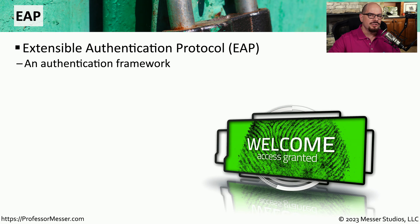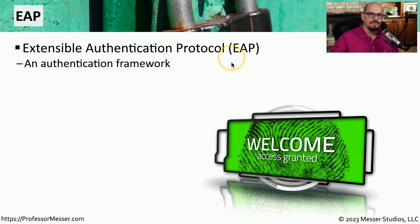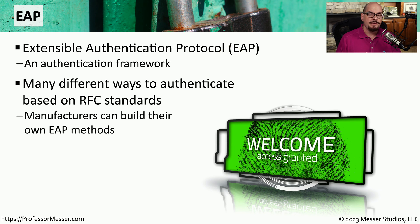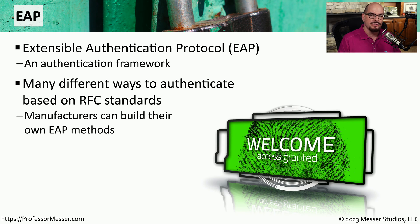Behind the scenes, the protocol that allows this port security to operate is called EAP — the Extensible Authentication Protocol. It's a framework for authentication that can be applied to many different types of networks and connections. If you're a wireless manufacturer, you can create an EAP configuration that works with your wireless access point. And if you create wired switches, you can enable EAP on that wired switch and integrate all of them together.